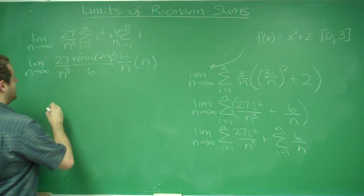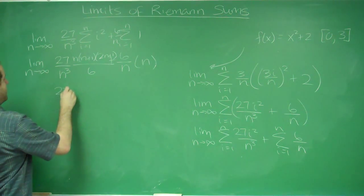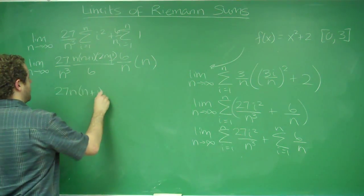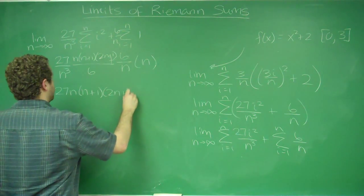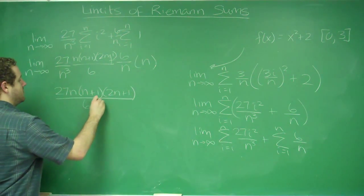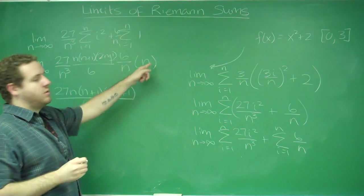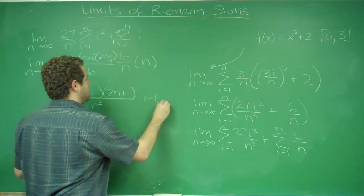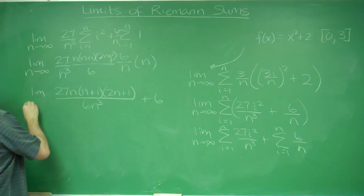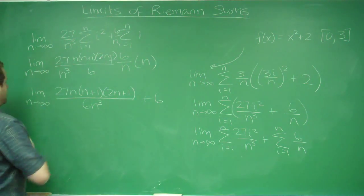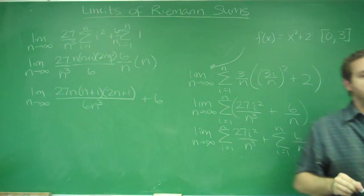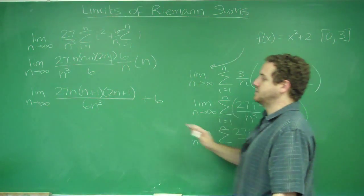Finally, we have 27 times n times (n plus 1) times (2n plus 1) over 6n cubed. On the other side, 6n over n gives us plus 6. We're taking the limit as n goes to infinity, so we need to determine what that limit is.